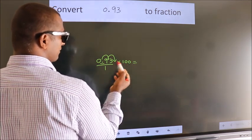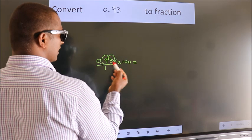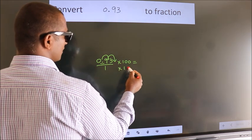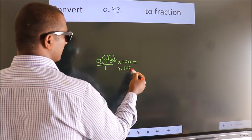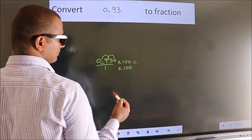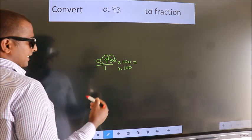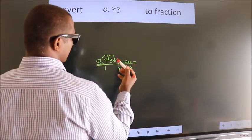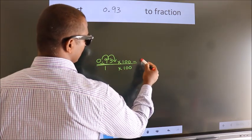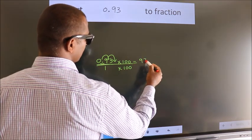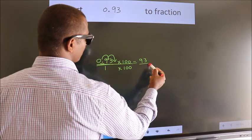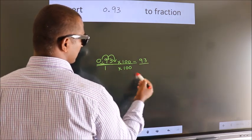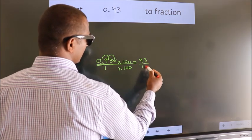Whatever we are multiplying in the numerator, in the denominator also we should multiply by the same. So, 0.93 into 100 gives us 93 in the numerator. In the denominator, 1 into 100 gives us 100.